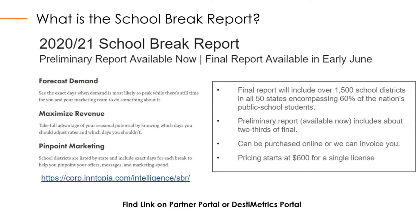First, let's talk about the school break report. This is a product available for purchase to our Entopia customers. It's a report of about 1,500 school districts and about 500 or so colleges and universities across the U.S. It shows you when they go back to school in the fall, and if they have any fall breaks, holiday breaks, spring breaks, winter breaks, and when they get off for summer. It also provides the data by state, so you can really pinpoint those markets.